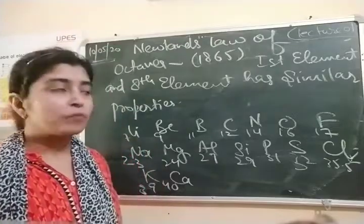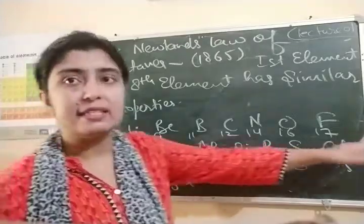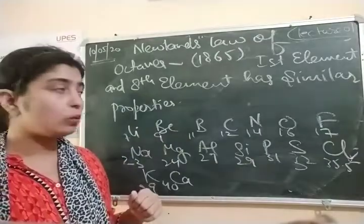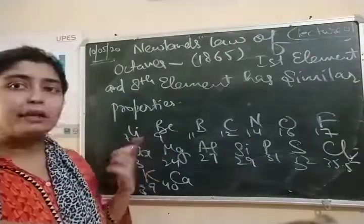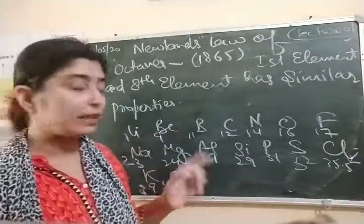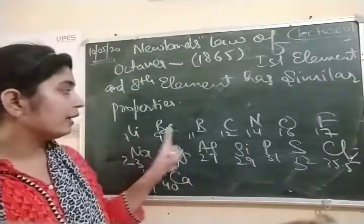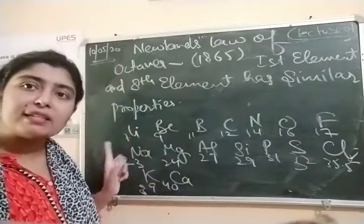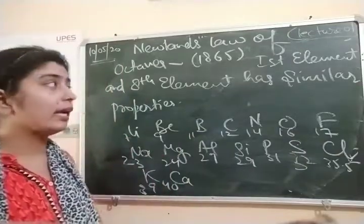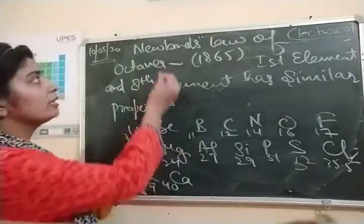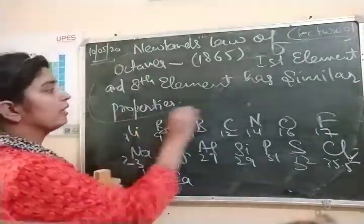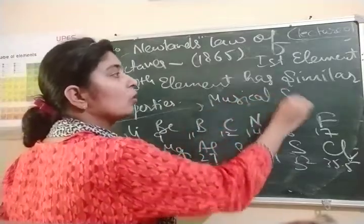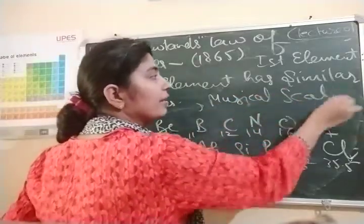At that time noble gases had not been discovered. And you can observe that just as a musical scale goes - Sa Re Ga Ma Pa Dha Ni Sa - after 'Sa' it repeats again. So Newlands' concept was explaining the same thing as the musical scale.